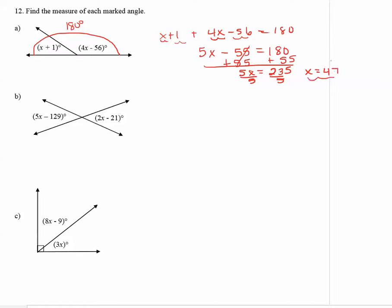Now notice this is not 47 degrees. This is just what x equals. We have to go back to the original picture and let x be 47 to figure out the measures of the angles. So the first angle on the left says x plus 1 degrees. So that becomes 47 plus 1 degrees or 48 degrees.